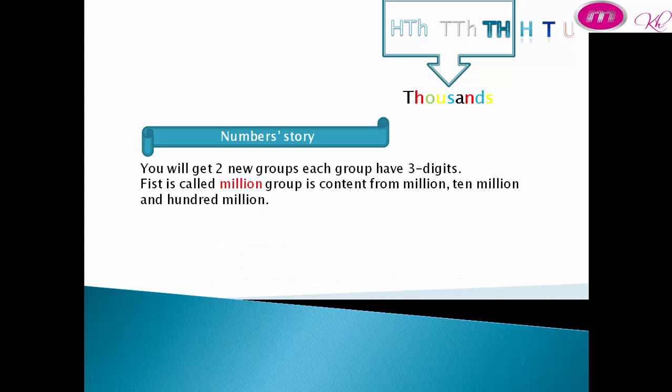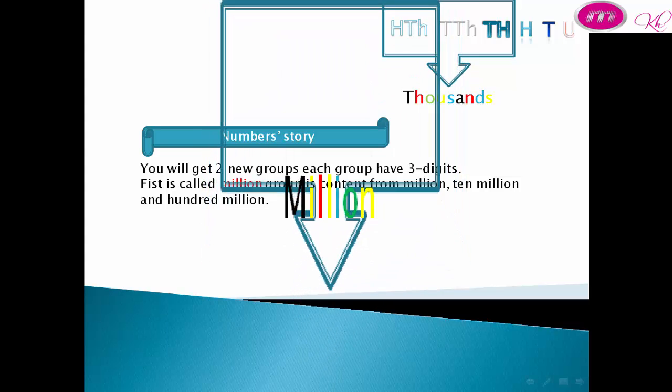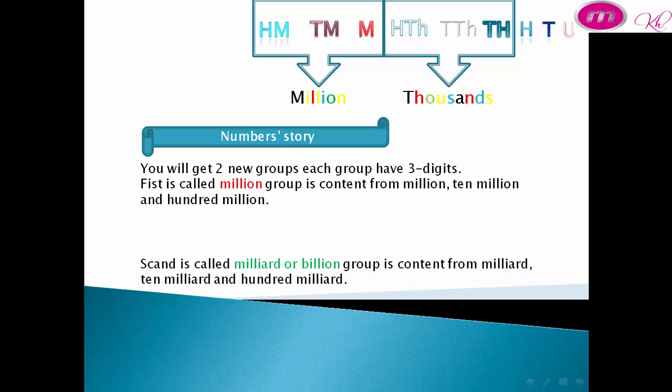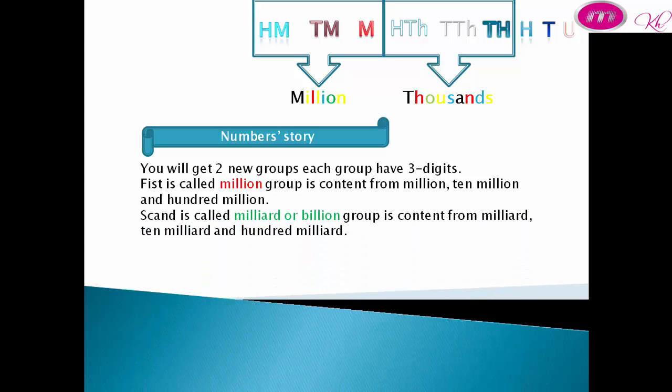First is called million group, is contained from million, ten million, and hundred million. Second is called milliard or billion group, is contained from milliard, ten milliard, and hundred milliard.